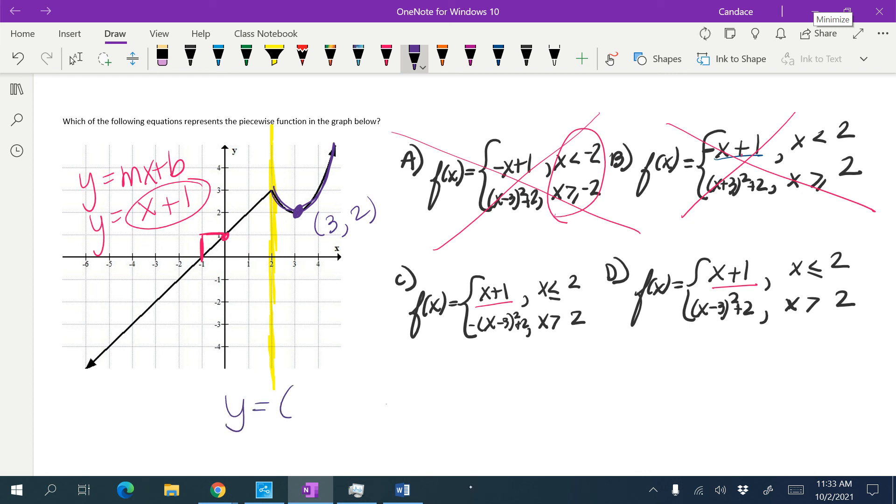Remember, our skeleton of our equation for our parabola is x equals h squared plus k. When we go in or out of parentheses, we change the sign. So it would be x minus 3 squared plus 2. So I'm looking for that.